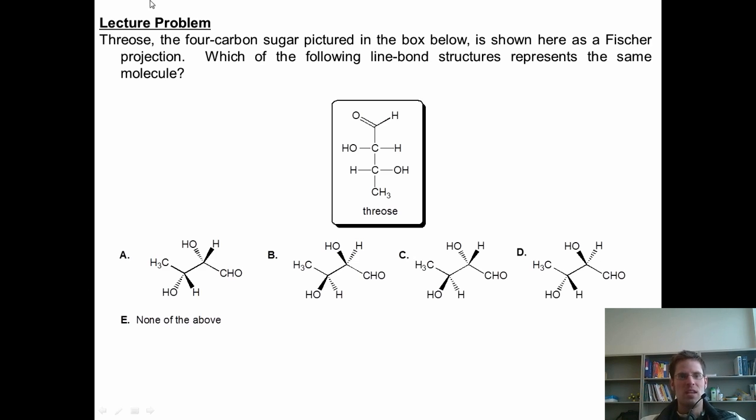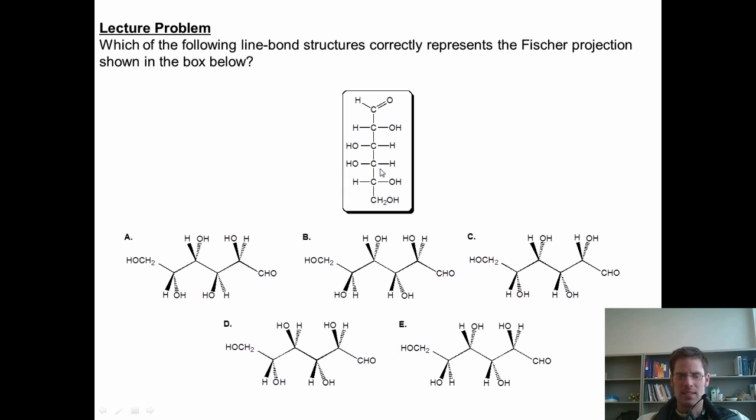And here's another. Threose, the four-carbon sugar pictured in this box, is shown here as a Fischer projection. Which of the following line bond structures represents the same molecule? Now you notice this question is a little bit more challenging because we have two stereocenters. Can you do it? This is my last example, which is clearly the most difficult one in our pile. Which of the following line bond structures of these five correctly represents the Fischer projection shown here in this box?